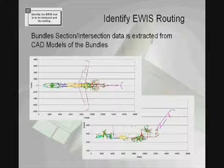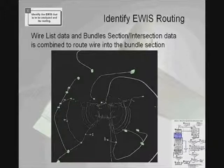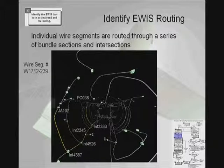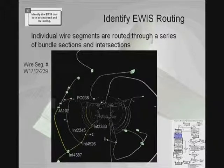Seen here is an example of the bundle section and connector information for a small aircraft. By integrating the harness information and breaking it into bundle section and wire data, this can be combined to route the wire throughout the aircraft. Individual wire segments are then routed through a series of bundle sections and intersections. Seen here in yellow, one wire is run from JA-102 to PC-038, running through a number of bundle sections and intersections until it reaches its final destination. To ensure consistency of the routing in the model, results can be compared against cut lengths and any variations can be evaluated.